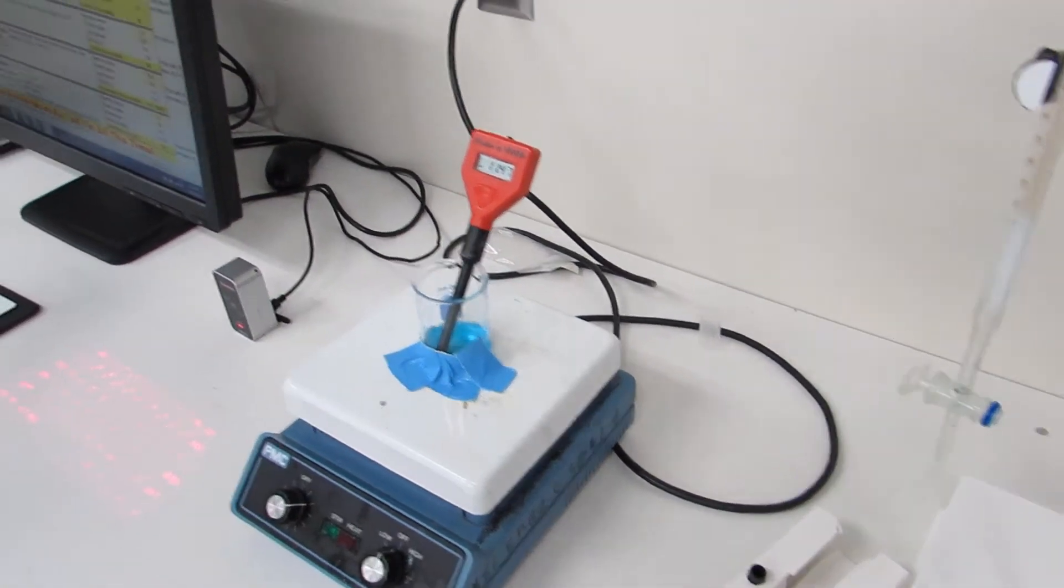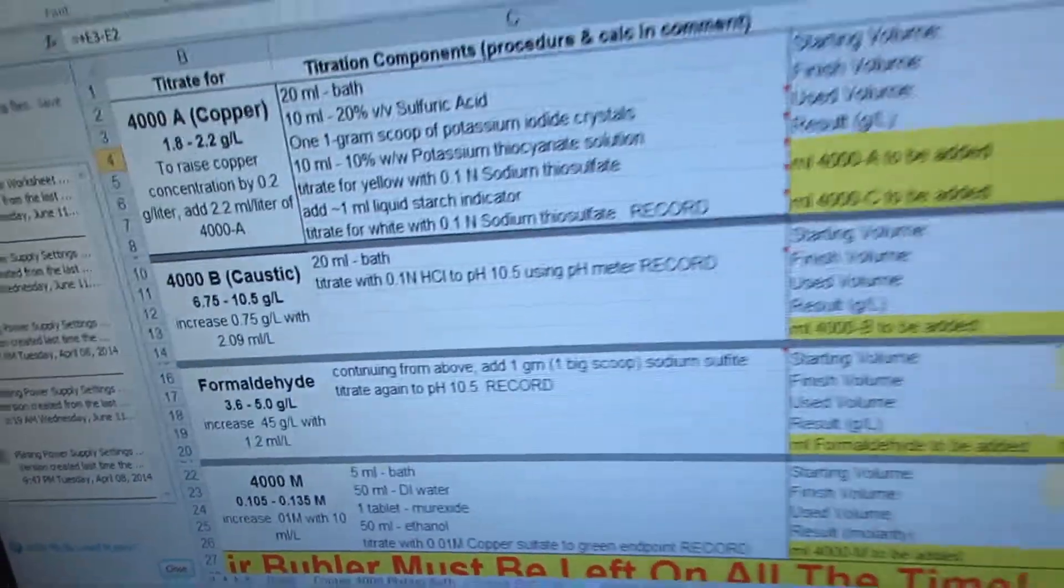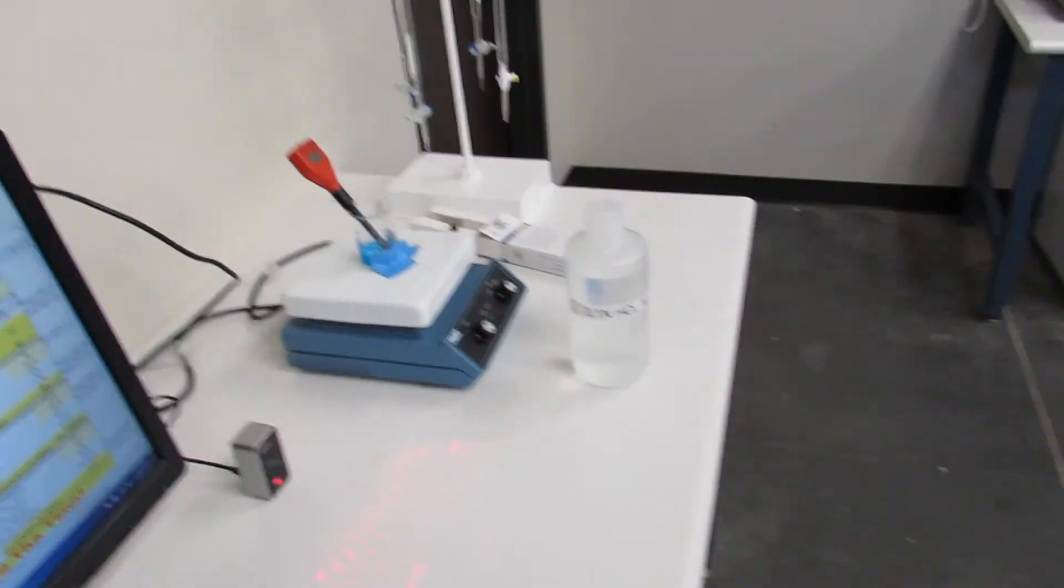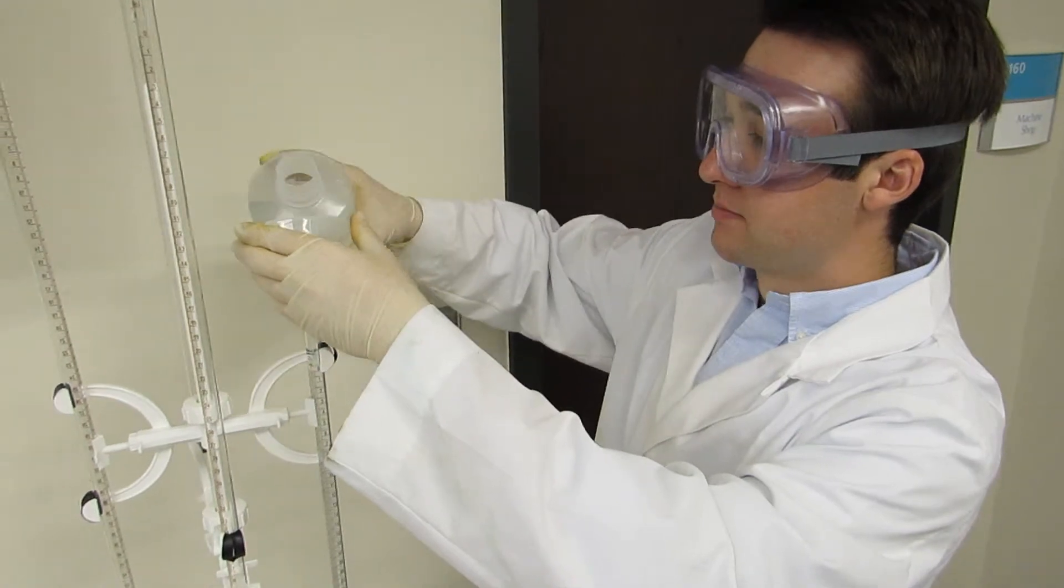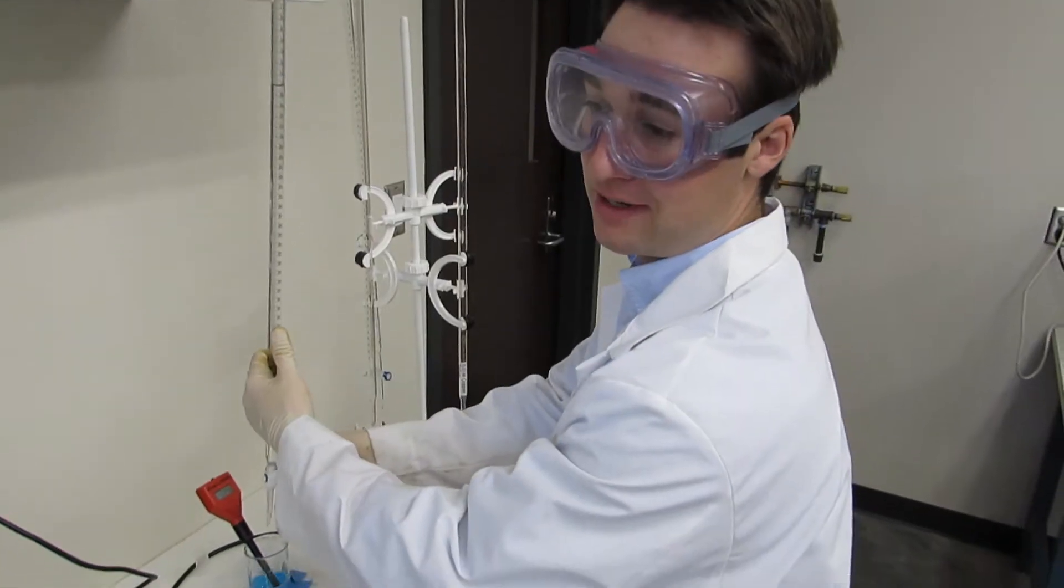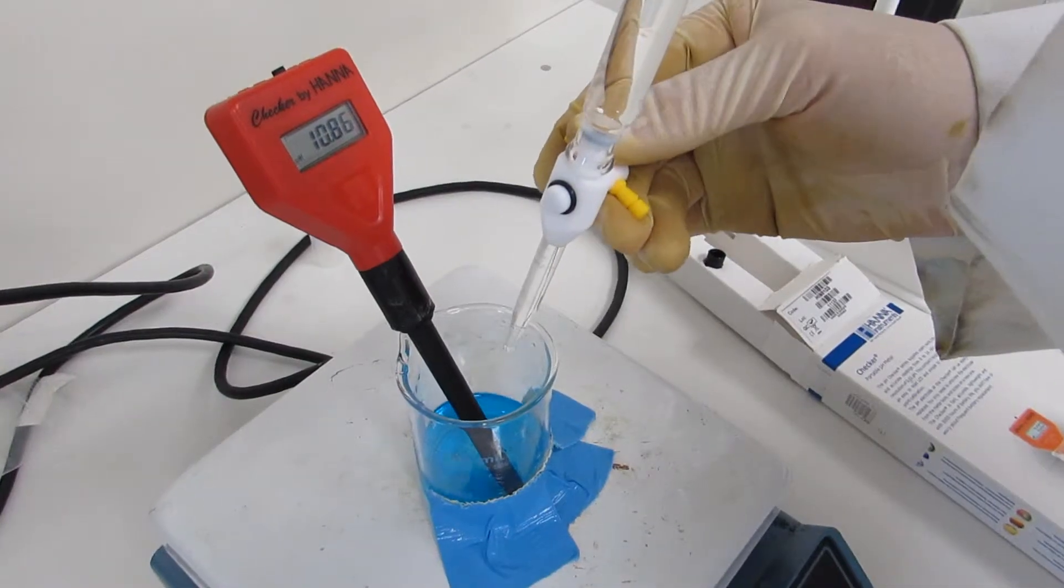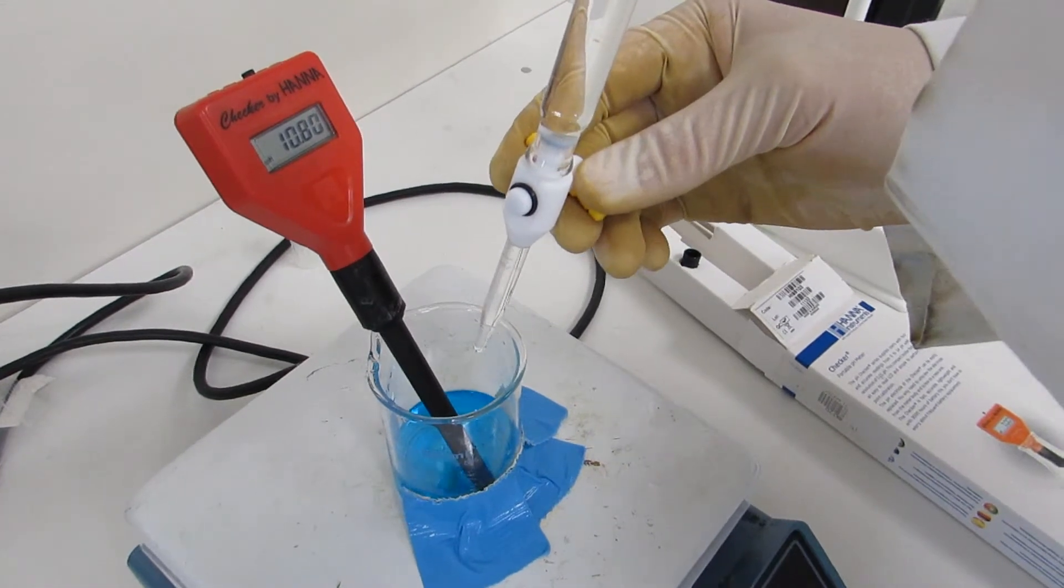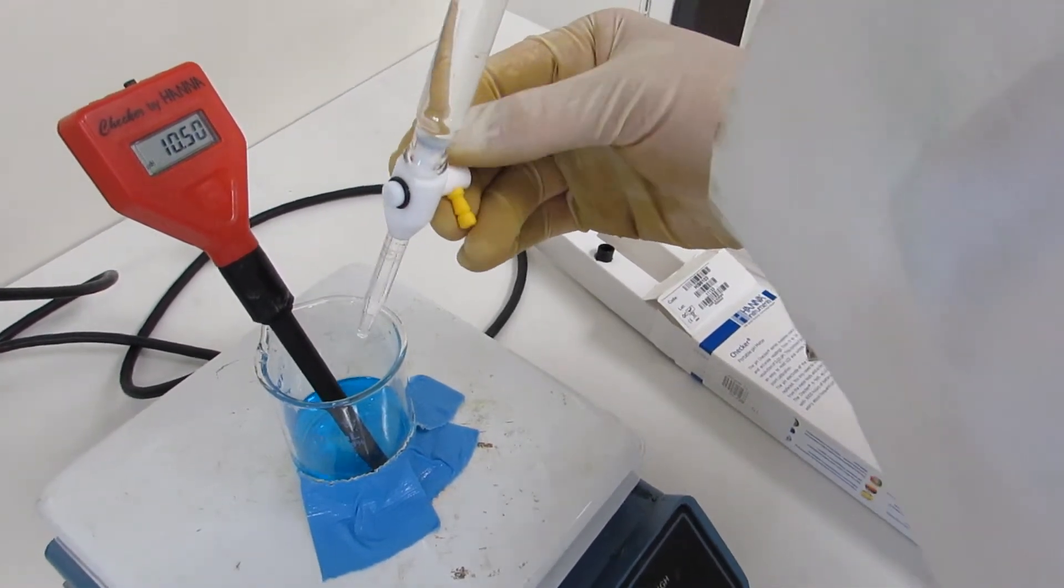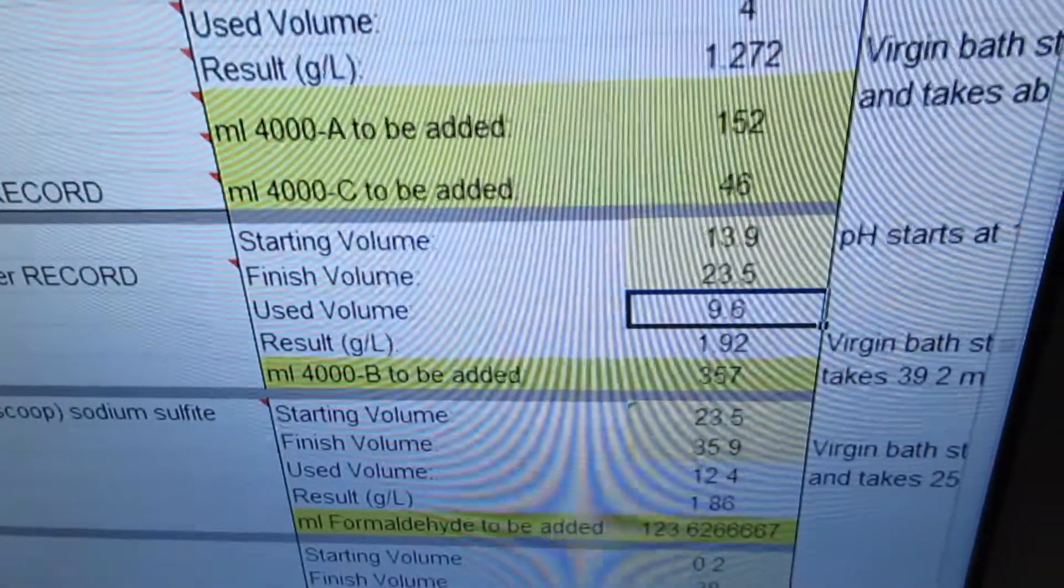Now we titrate for pH of 10.5 using hydrochloric acid. That is in the acid cabinet. So now you pour the hydrochloric acid into its own burette. Fill this one up a good portion of the way and you got 13.9. Now we titrate for a pH of 10.5. You have to be careful to make sure you don't add too much hydrochloric acid to the mix and go past 10.5. There we go. We got it. Volume of 23.5. We enter that in. We show result is 1.92.